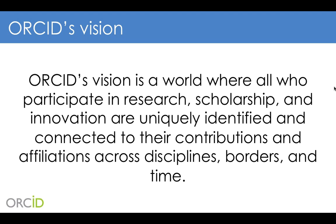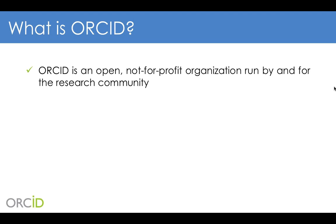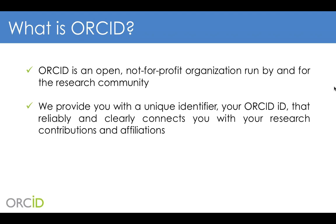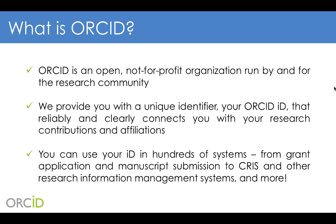So that's our vision. What is ORCID? First and foremost, we're an open organization. Our full name is Open Researcher and Contributor ID. The O is for open, and that's very important. We're also a not-for-profit organization, and we're run by and for the research community — for example, our board comprises member organizations and they have to be a majority of not-for-profit organizations. We provide researchers with a unique identifier — an ORCID ID — which is used to both identify you and then connect you with your research contributions and affiliations.